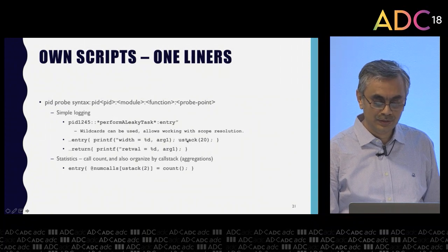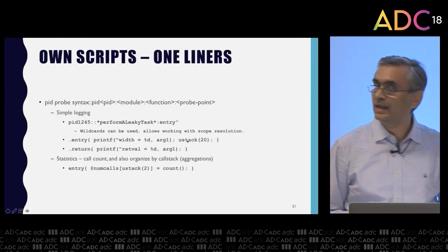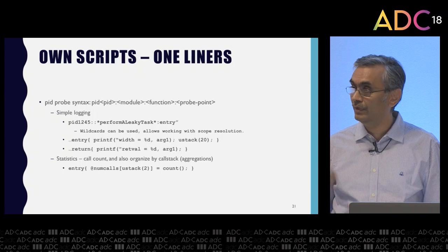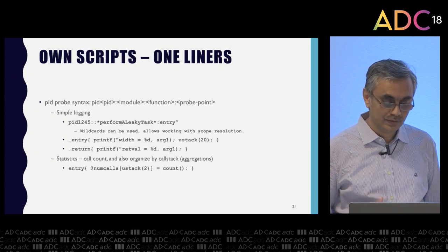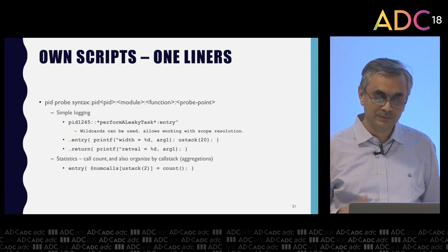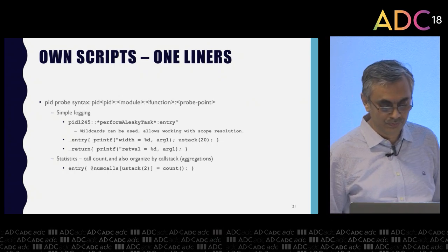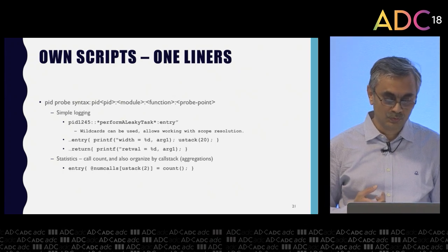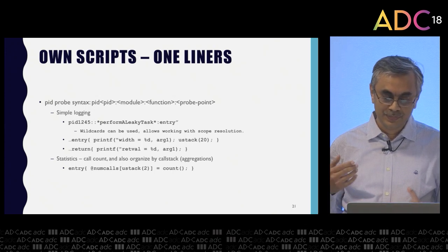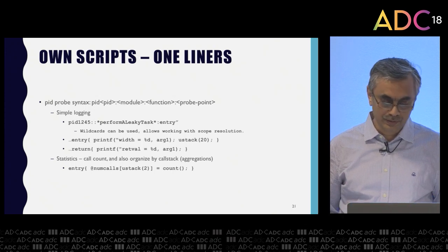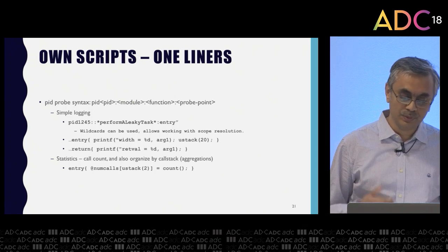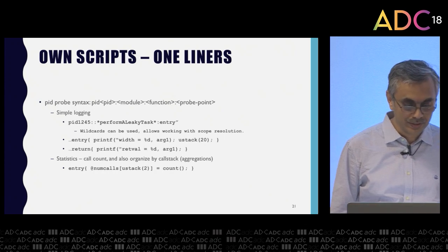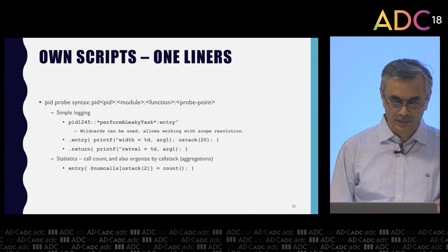The third example probes the return point and prints the return value. You can also gather statistics — find out how many times a function was called, organized by categories like which call stack it was called from. And these are all one-liners.